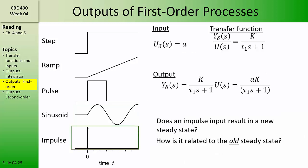Next consider the impulse input to the first-order transfer function. The impulse input in the Laplace domain is a constant a, so the output is just ak over (tau s plus one). This is an exponential decay with a magnitude ak and a time constant tau — the same form we saw in example 3.6 at the end of chapter 3. In the next video, we'll feed some of these same inputs to the second-order transfer functions.